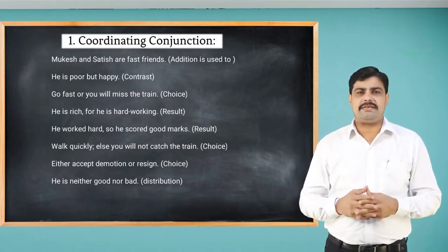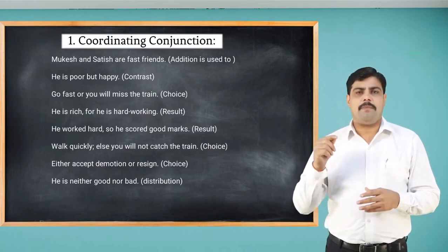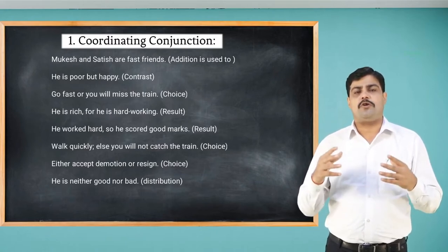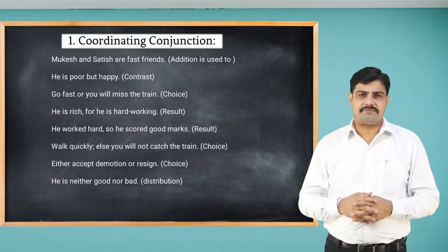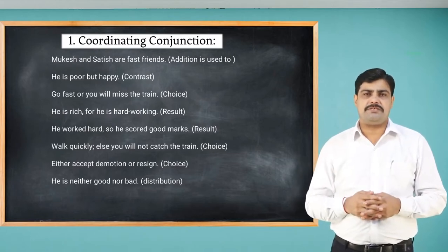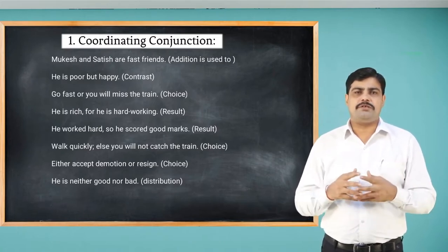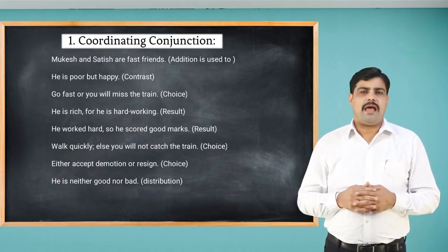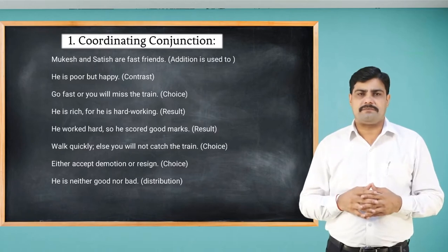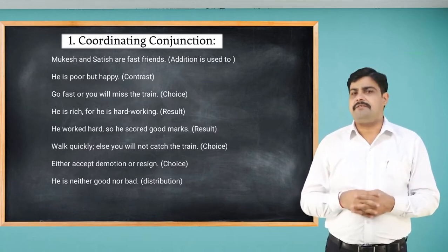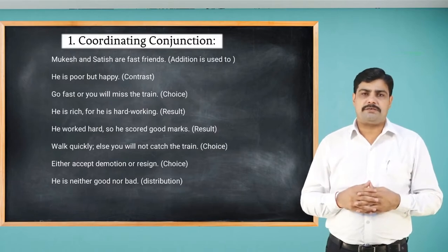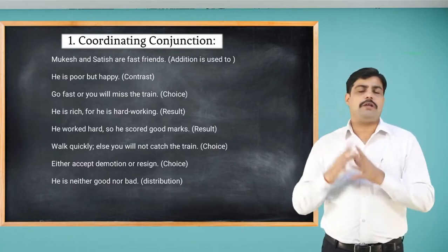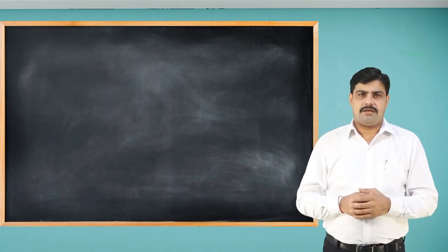In these sentences: 'and' is used for addition, 'but' is used for contrast, 'or' is used for choice, 'for' is used for result, 'so' is used for result, 'else' is used for choice, 'or' is again used for choice, and 'neither...nor' is used for distribution.